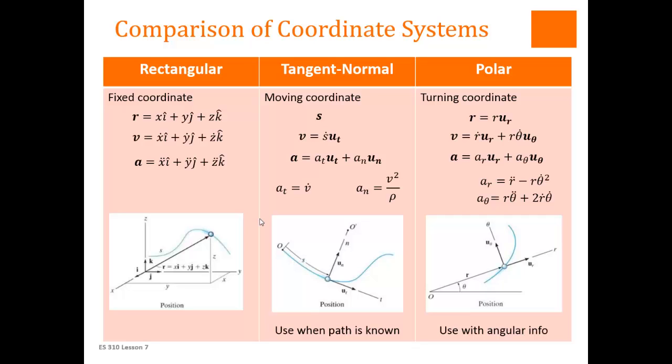In the polar or cylindrical coordinate system, we have a coordinate system that is fixed but rotates. And so there we typically know information about that rotation, whether it be the rotation speed or the rotation or acceleration.